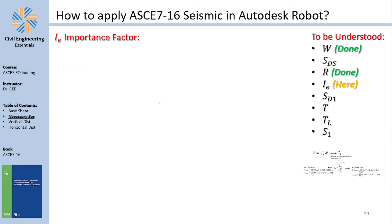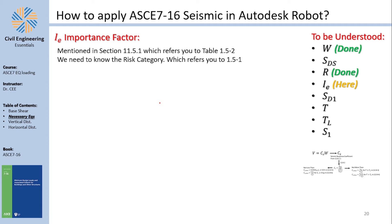The importance factor IE (section 11.5.1) measures how critical a structure is. The code references table 1.5-2 for the seismic importance factor, which in turn depends on the risk category from table 1.5-1 — the code frequently sends you back and forth between sections.